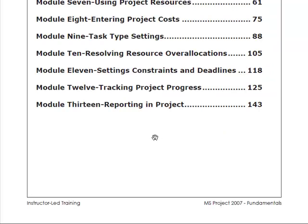In the Table of Contents section, you'll see the various modules and topics we'll be covering. The first thing we'll be looking at will be exploring the project environment, and then we'll get started with Microsoft Project. Module 3 will cover modifying and organizing the task lists. Module 4 will go into shaping the schedule. Then Module 5 covers modifying task dependencies, working with calendars, using project resources, entering project costs, task type settings, resolving resource over-allocations, setting constraints and deadlines, tracking project progress, and concluding with reporting in project.